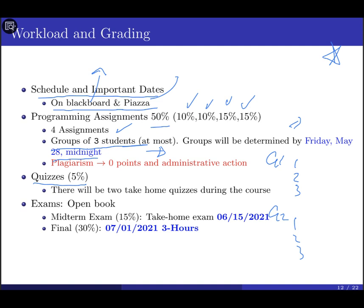We have two quizzes, each worth 5%. I prefer having quizzes because the format and structure will be similar to the midterm exam. We have one midterm worth 15%. So if you do well on the quizzes, the midterm will follow a similar format. The quizzes are open book, and so is the exam — open book, open notes, but closed to friends. You cannot communicate with others during the exam.